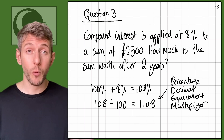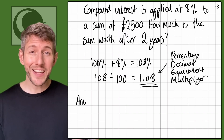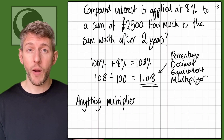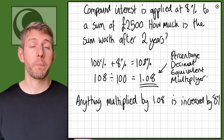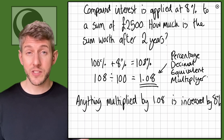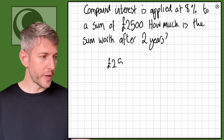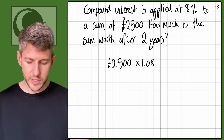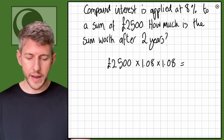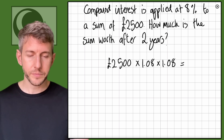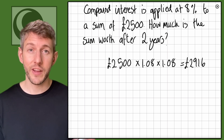Anything we multiply by 1.08 will increase by 8%. It's only two years this time, so we only need to increase it twice. So I'm going to do 2,500 times 1.08 times 1.08, and that gives me £2,916.